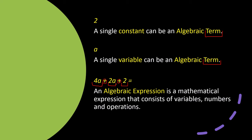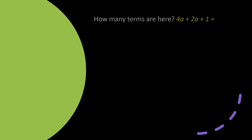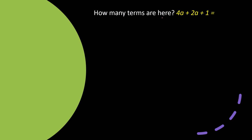On your GED exam you're going to be asked to identify how many terms are in an algebraic expression. For example, right here I can tell we have three terms — one term here, another term here, and another term here. Remember a constant can also be a term on its own. I know there are three terms because they are separated by two addition operation symbols. So how many terms do I have? Three terms.